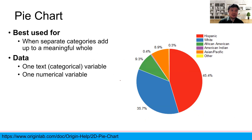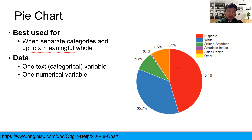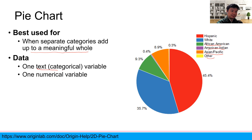A pie chart is best used when separate categories add up to a meaningful whole. For example, the red color means Hispanic, blue means white, and green means African American, American Indian, Asian Pacific, and other groups. Using a pie chart you can easily understand the categories and the portion of each. The data consists of one categorical variable and one numerical variable.